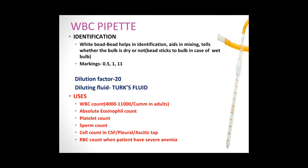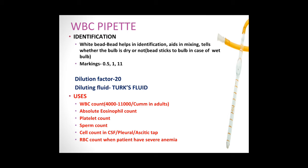Next are the WBC and RBC pipettes, also known as Thoma pipettes. The WBC pipette is identified by a white bead in the bulb. The white bead helps in identification, aids mixing of blood and diluting fluid, and indicates if the bulb is wet — if the bead sticks to the wall, the pipette is wet. Markings on the WBC pipette are 0.5, 1, and 11. Blood is filled to the 0.5 mark and diluting fluid to the 11 mark, giving a dilution factor of 20.